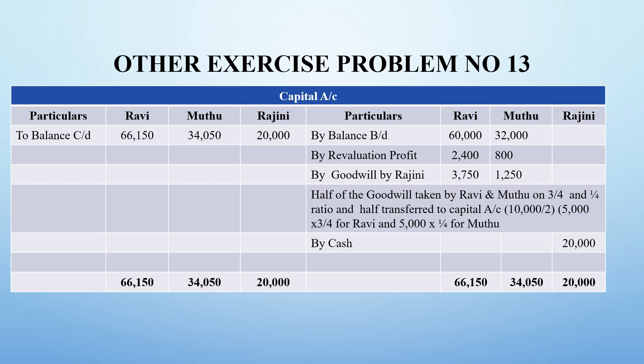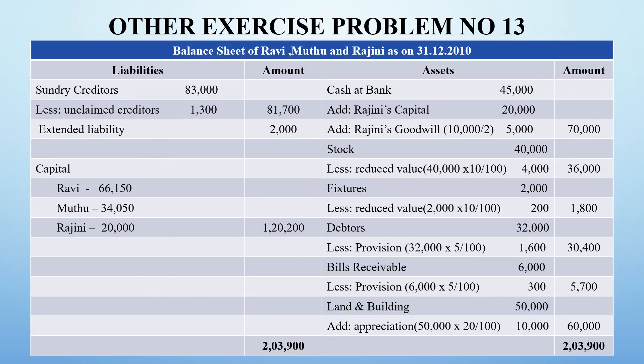The closing capital balances are Rs. 66,150 for Ravi, Rs. 34,050 for Muthu, and Rs. 20,000 for Rajini. The last step is to prepare the balance sheet of Ravi, Muthu and Rajini as on 31.12.2010. With Rajini as a new partner, the business value has increased.